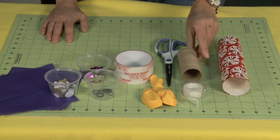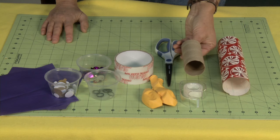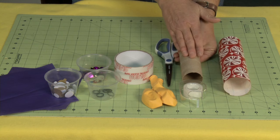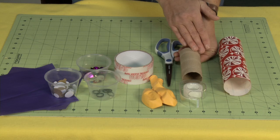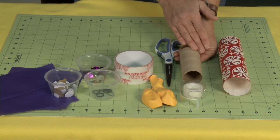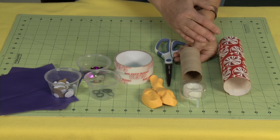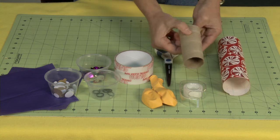So for this project, the most important thing you're going to need is the inside tube of either toilet paper or paper towel roll. You could even use the inside of a Christmas wrapping paper roll. You can just cut it to whatever size you want. But you do need some sort of paper tube.